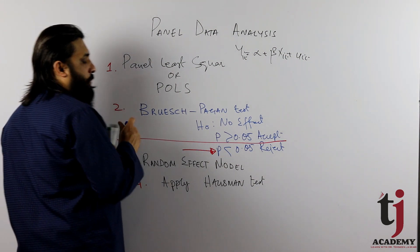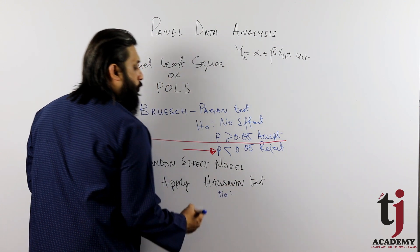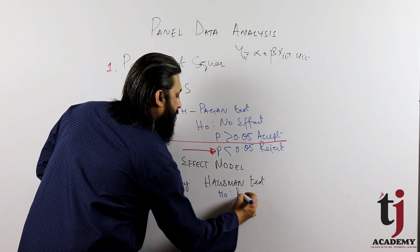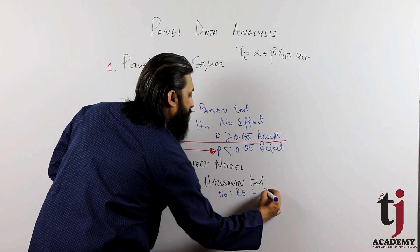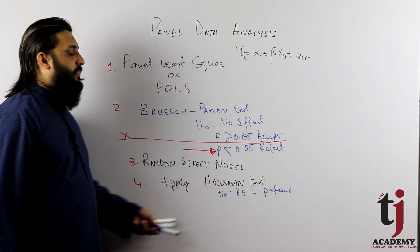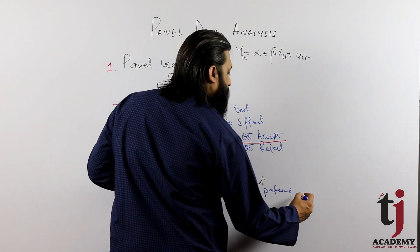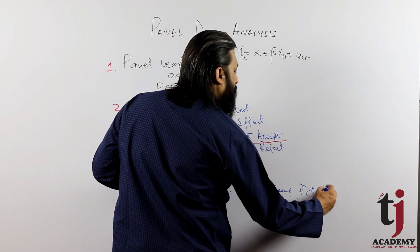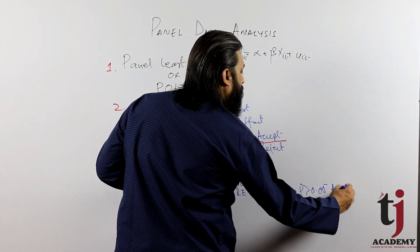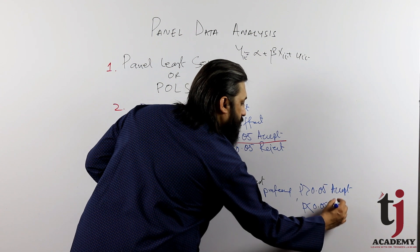Hausman test. Hausman test hypothesis H0 that is, you can see, random effect is preferred. Random effect, what is preferred? If it is greater than 0.05, then accept, and